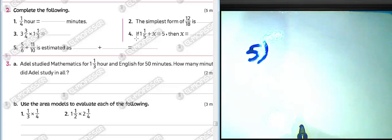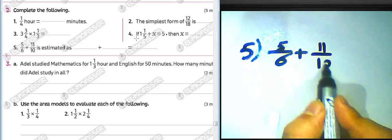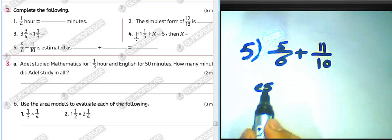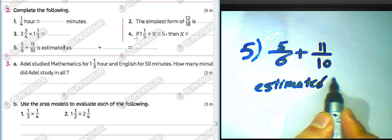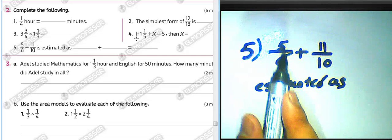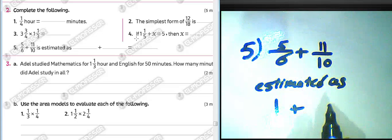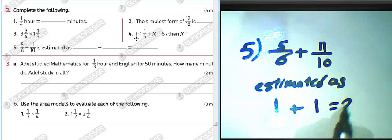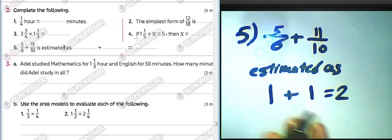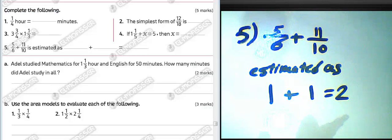Question number five: five and five over six plus eleven over ten, estimated as what? Five and five over six is estimated to six. Eleven over ten means one and one over ten, estimated to one. Six plus one equals... wait — five over six rounds to one, so the estimate is one plus one equals two. Write two.